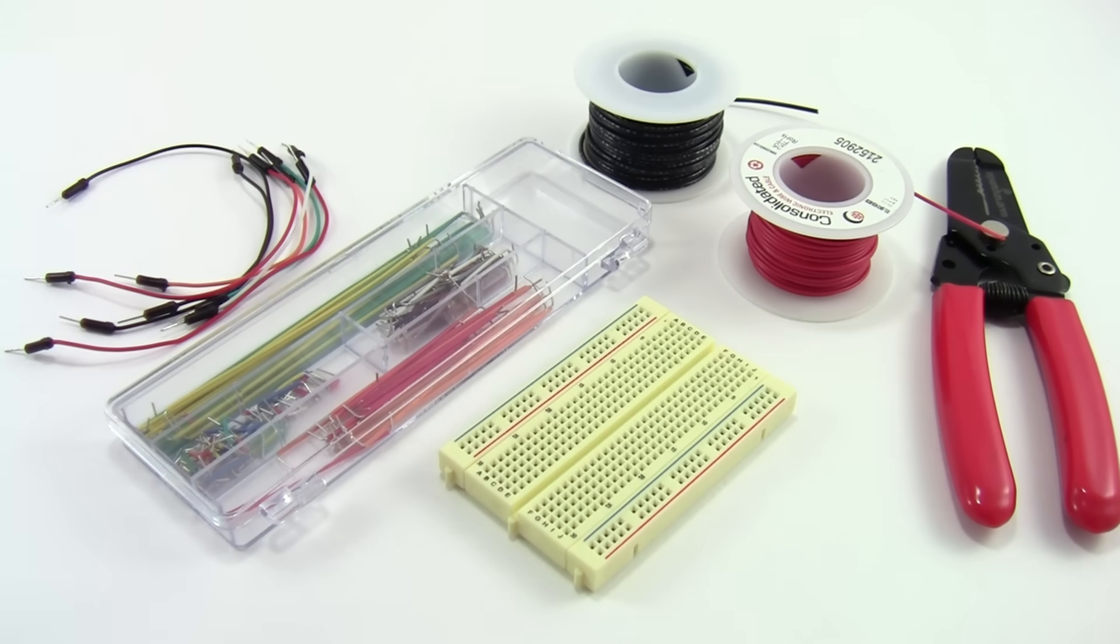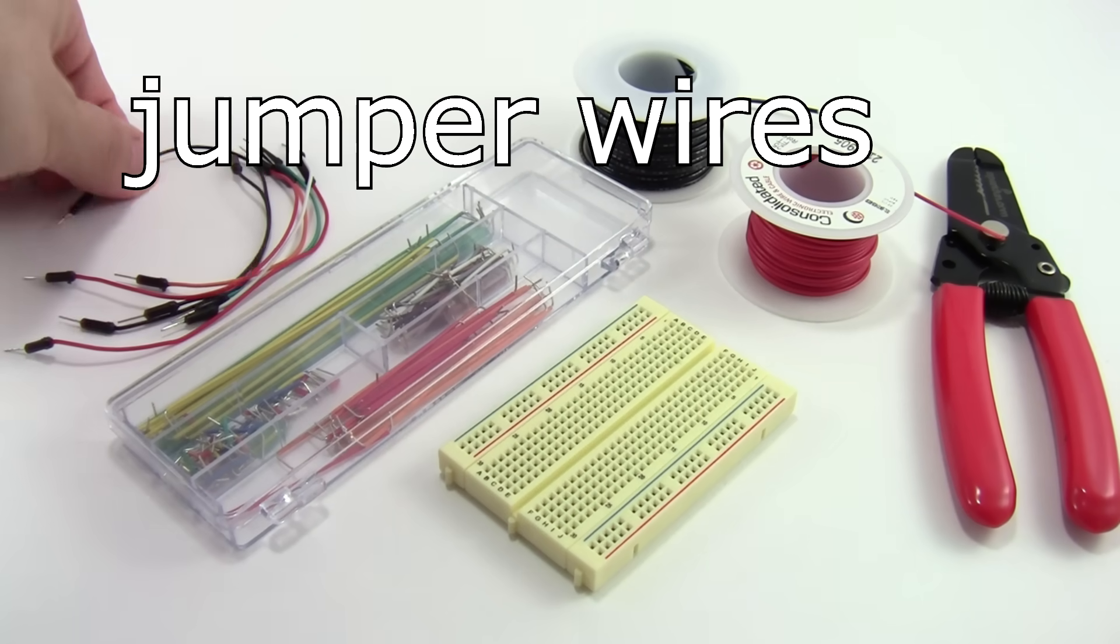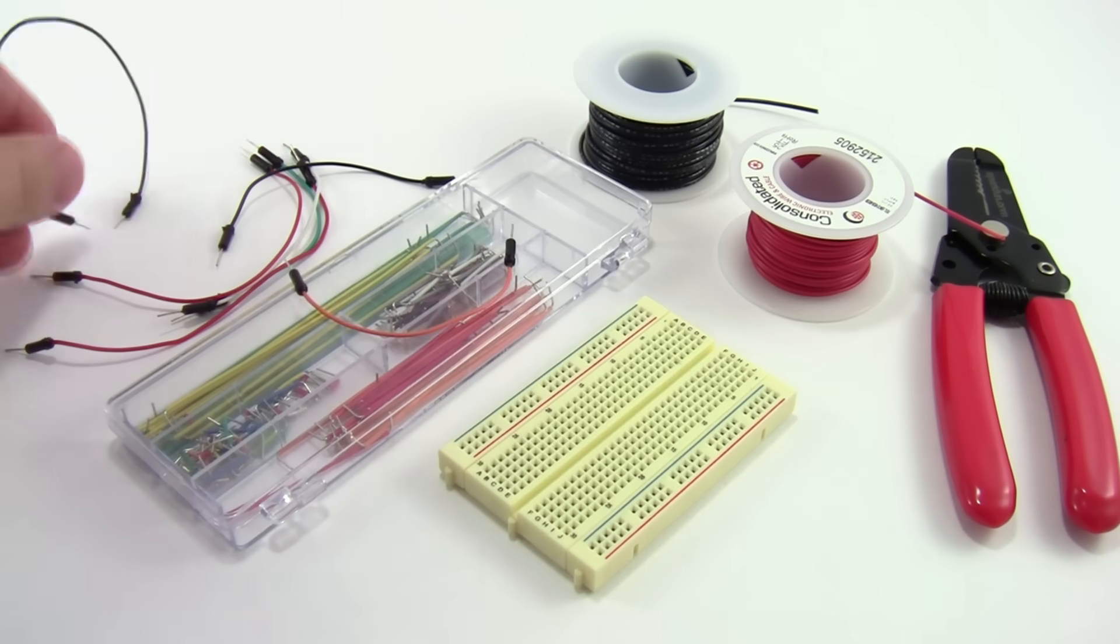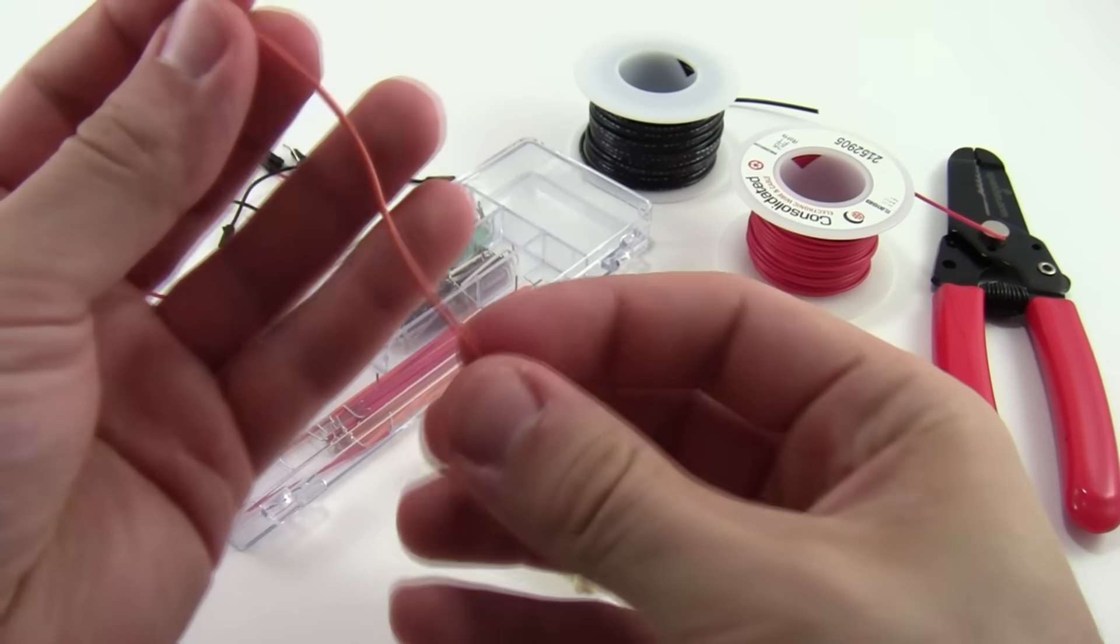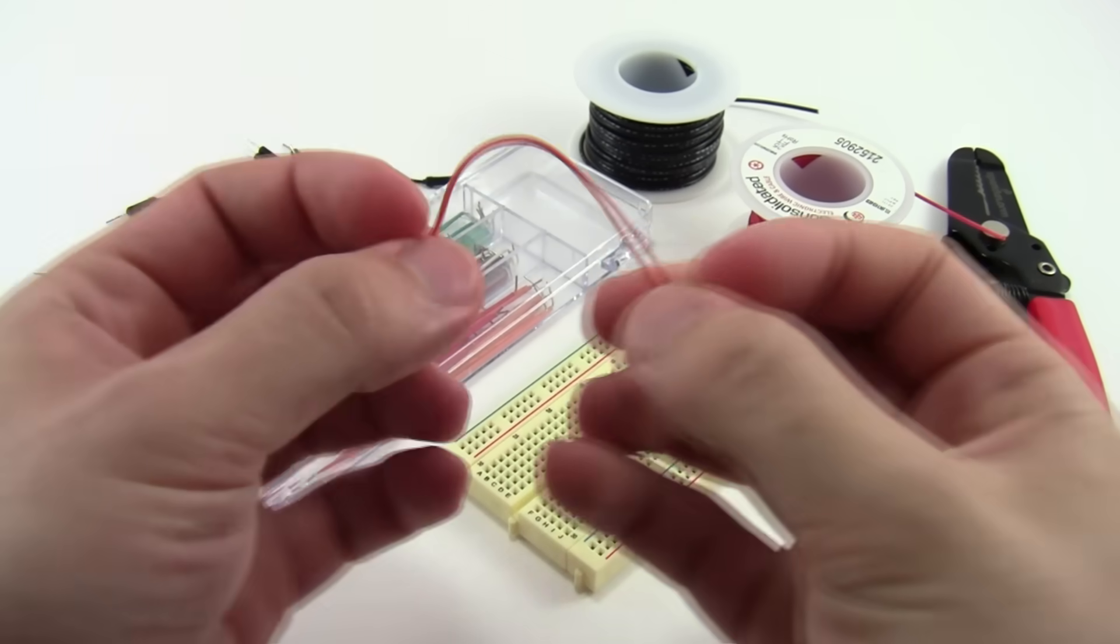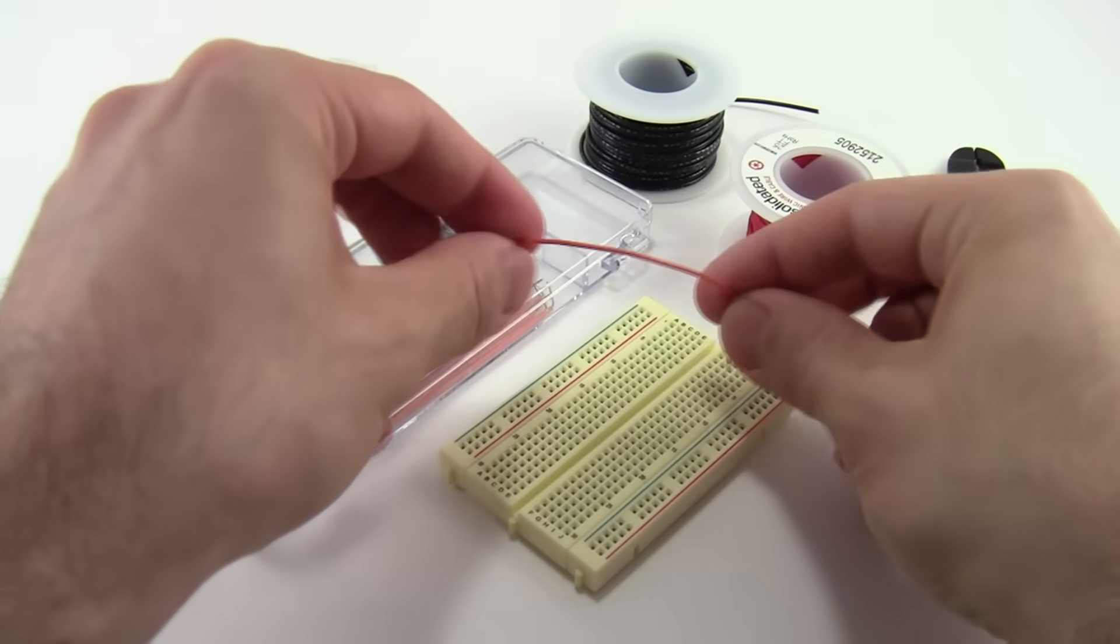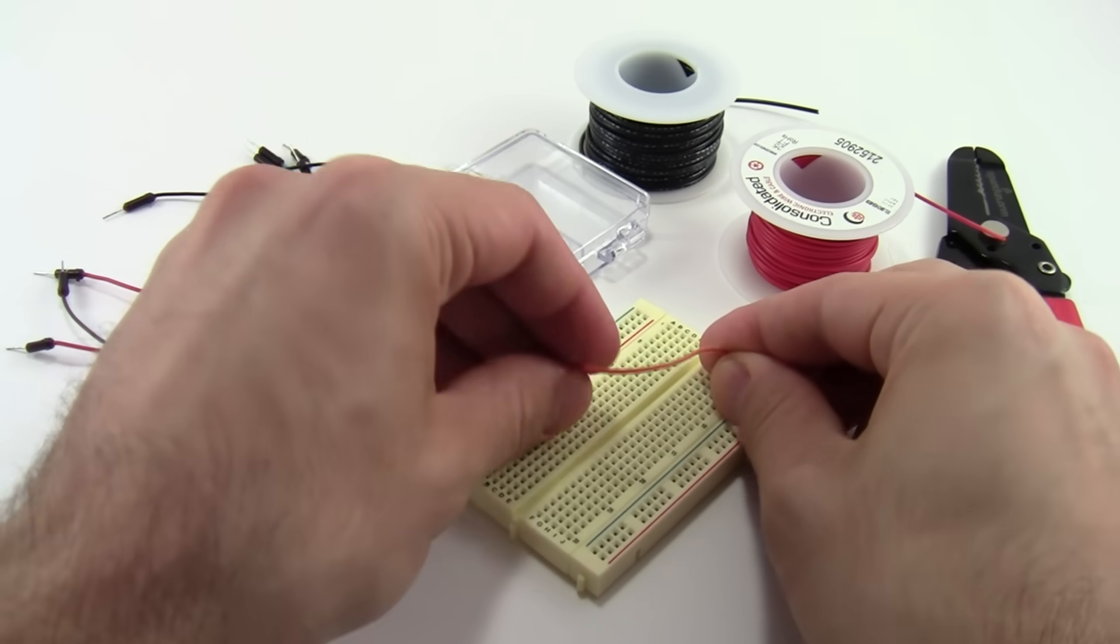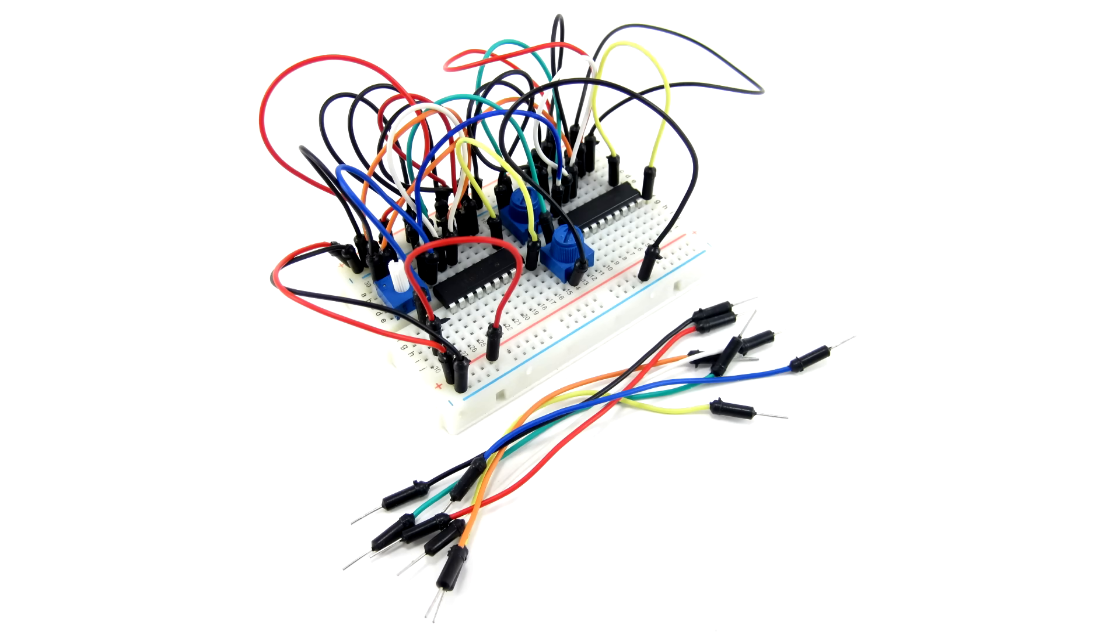When using a breadboard, you'll have to decide what type of jumper wires you want to use, and there are several different types available. First are these long, flexible wires that come in many different colors and are usually sold in packs of at least 10. The wires themselves are very flexible, but they have metal pins attached to their ends that make them easy to press into the breadboard. While these wires can be very convenient for simple circuits, they can get very messy with complicated circuits, and as you add more and more to a breadboard, you'll eventually get a tangled nest of wires that can be very hard to keep track of.